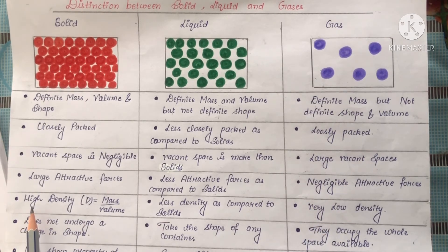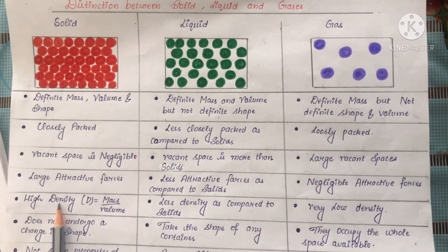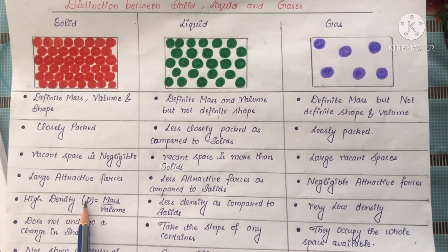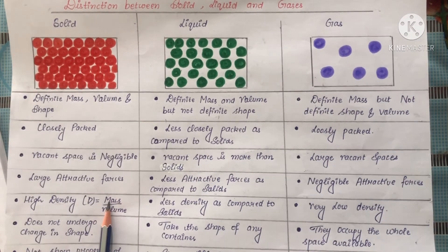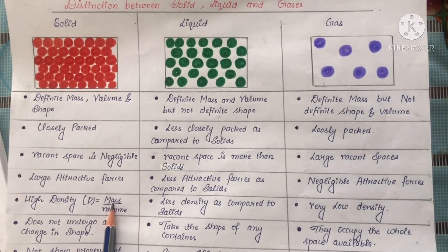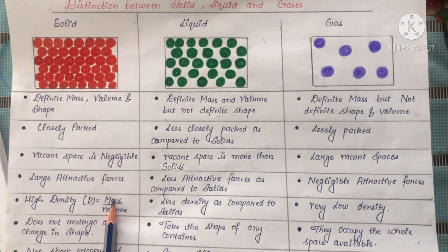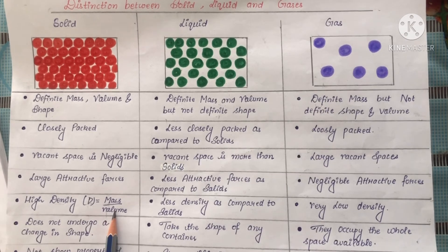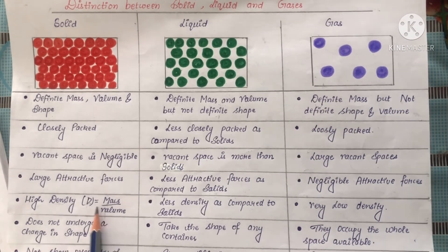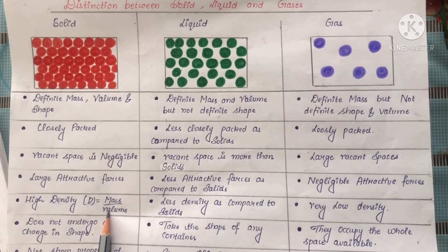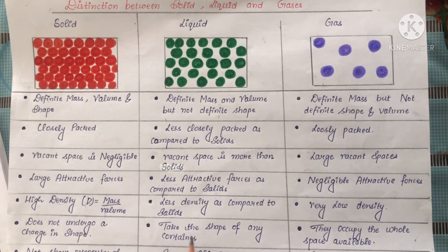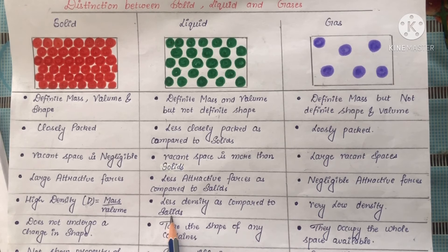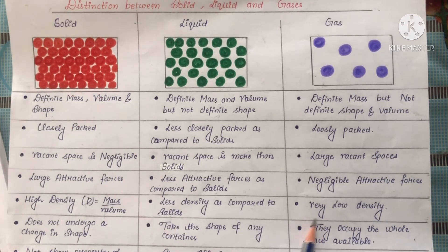Next point is solids have high density. What is density? Density is mass per unit volume, meaning density is directly proportional to mass. If mass increases, then density also increases. If volume decreases, then density increases. If volume increases, then density decreases. Liquids have less density as compared to that of the solids, and in case of gases, the density is very low.